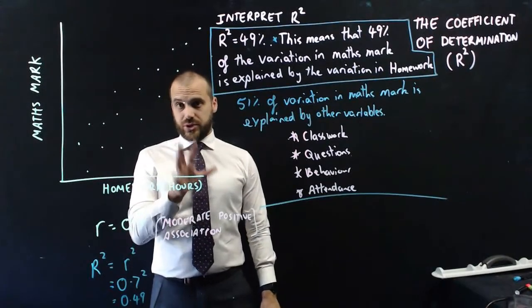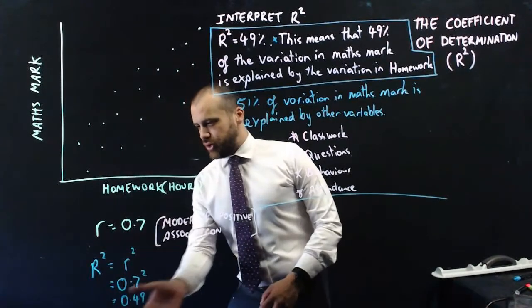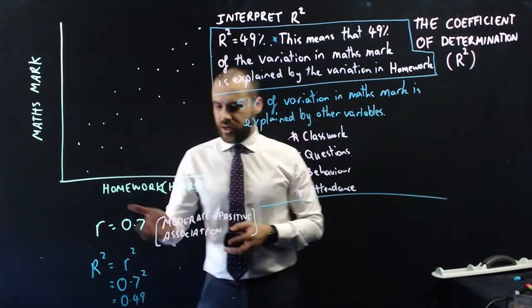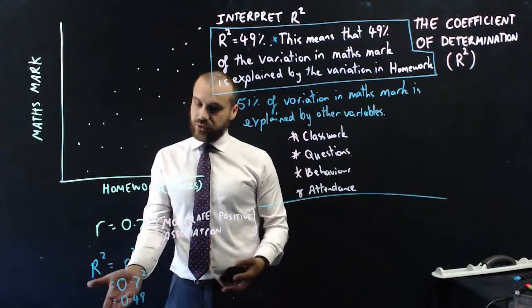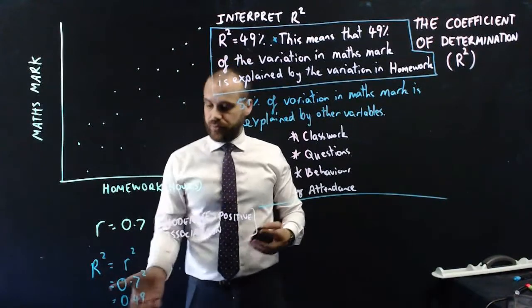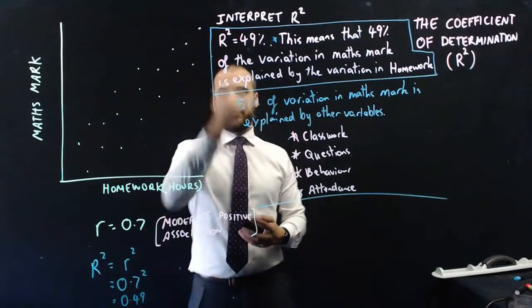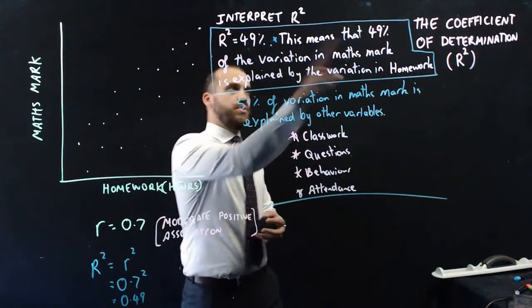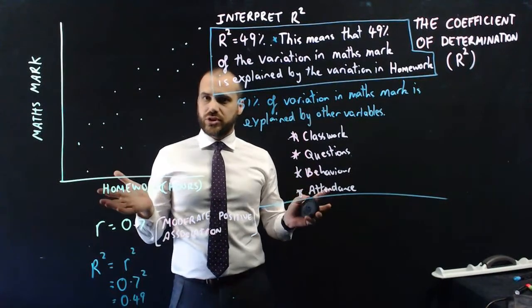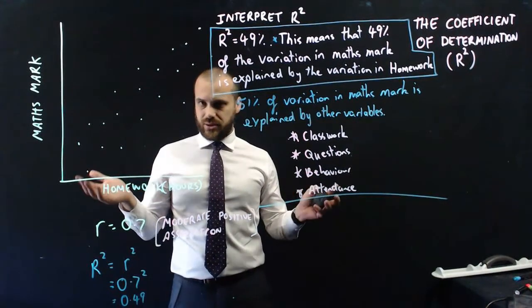So that's honestly all there is to r-squared. Make sure that you know how to calculate that. You use technology to find r, probably your scientific calculator. Then you just square it and that will give you r-squared. You need to express it as a percentage. 0.49 becomes 49%. And then you need to be able to write this sentence. That's it. That's the coefficient of determination. That's what it means. That's how it works.